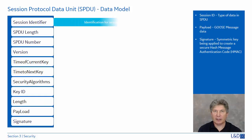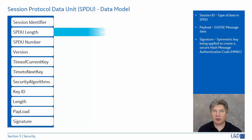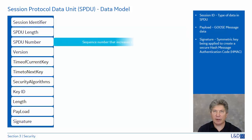The GOOSE identifier indicates what type of payload there is — whether this is a GOOSE or sampled value. The SPDU length is the size of the SPDU, including header content and payload. The SPDU number is a value used to detect duplicates or out-of-order packets. This is maintained by the sender, starts at zero, and increments with each subsequent SPDU.